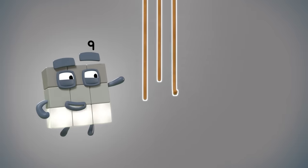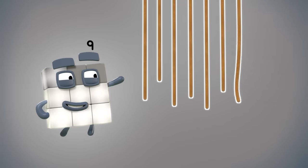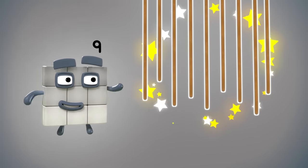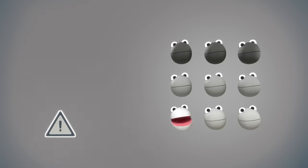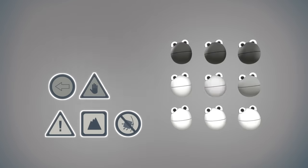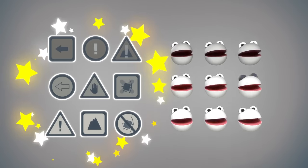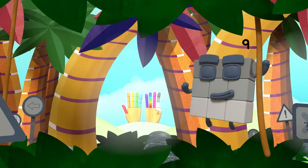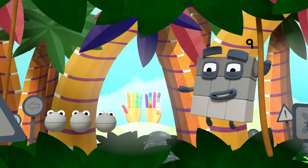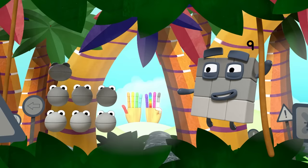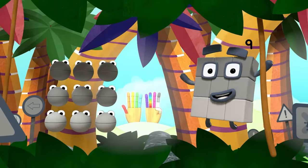One, two, three, four, five, six, seven, eight, nine — nine vines! One, two, three, four, five, six, seven, eight, nine. One, two, three, four, five, six, seven, eight, nine. Nine, nine, nine NumberBlobs and me.